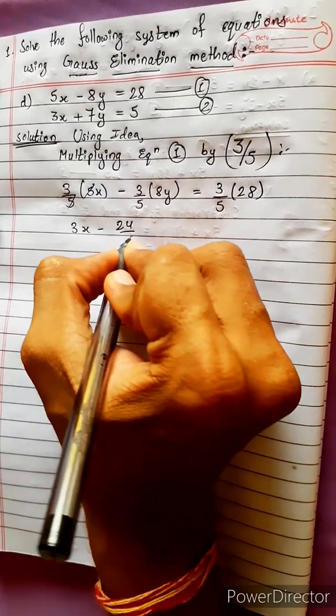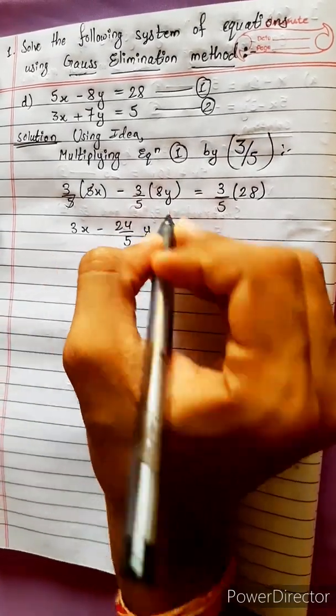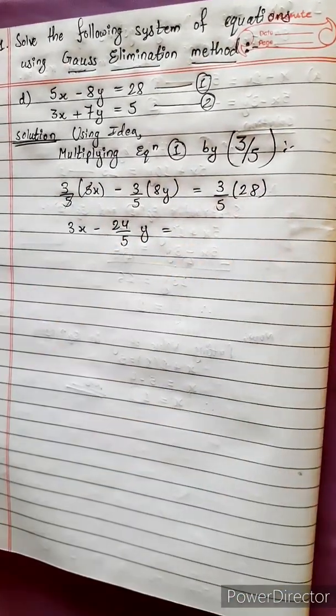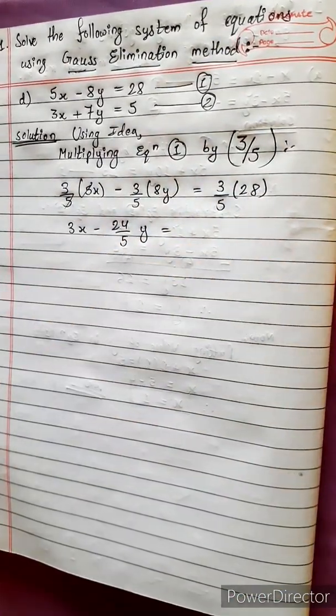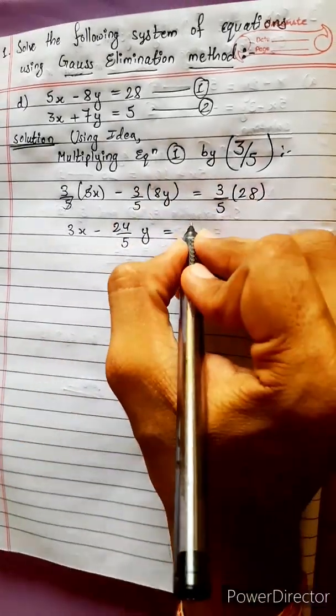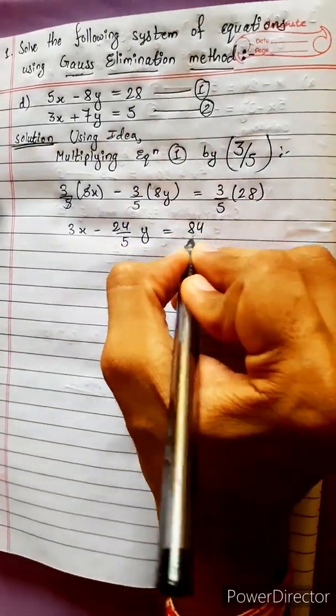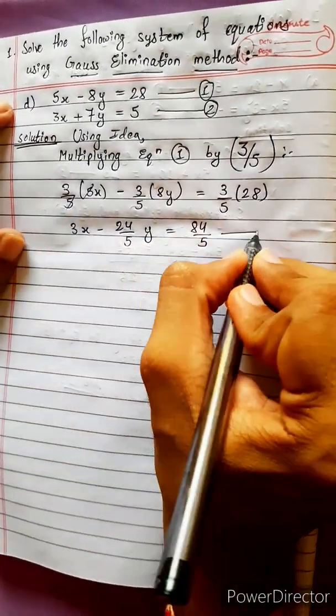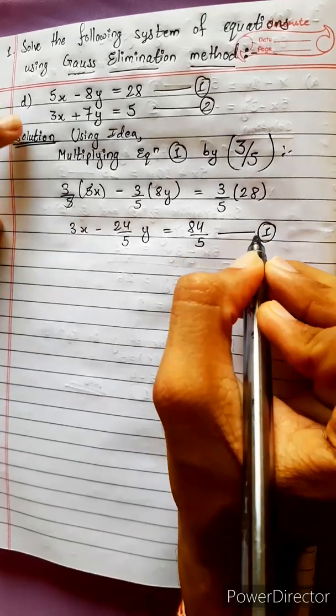It is 28 into 3, which is 84, divided by 5. So the result is 84 divided by 5. Let's make this equation 1.